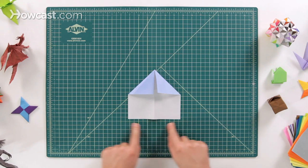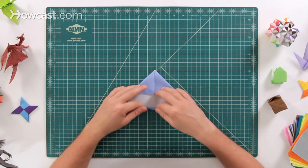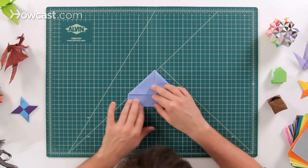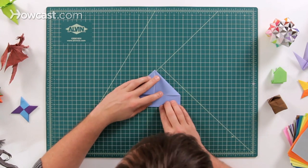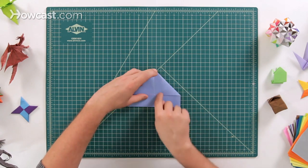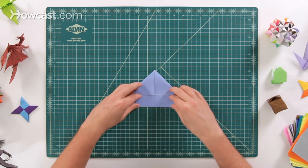Next, we're going to take the bottom edge right here and fold it up to meet those corners, right up like this. So there should be little to no white showing, you want all the colors on top there.